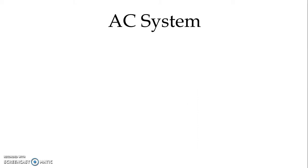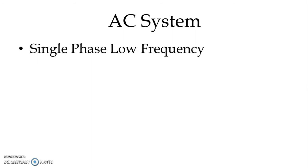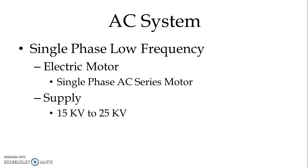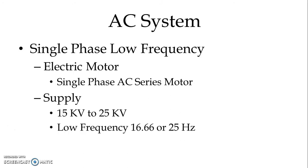We start with the AC system. In the AC system we have three different categories: single phase AC system with low frequency, single phase AC system with high frequency, and three phase with low frequency. Starting with single phase low frequency, the electric motor used for motive power is a single phase AC series motor, and the supply is a single phase high voltage in the range of 15 kV to 25 kV for overhead distribution. A traction substation is used to feed the distribution network.